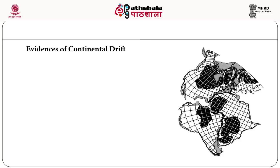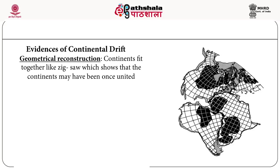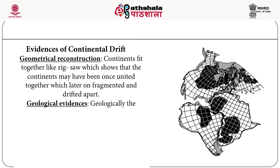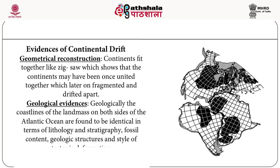The evidences of continental drift include geometrical reconstruction: continents fit together like a jigsaw, suggesting they were once united and later fragmented and drifted apart. Geological evidences show that the coastlines on both sides of the Atlantic Ocean are identical in terms of lithology and stratigraphy, fossil content, geological structures, and style of tectonic deformation.